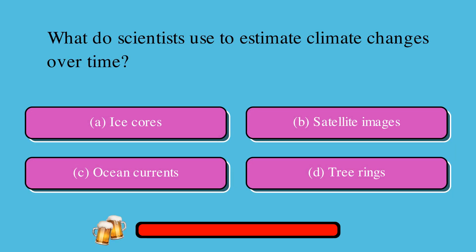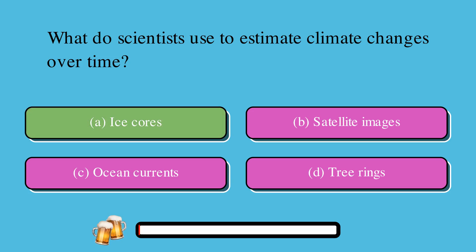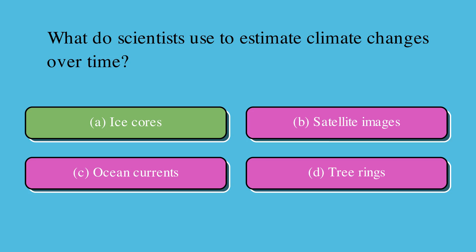What do scientists use to estimate climate changes over time? A. Ice cores, B. Satellite images, C. Ocean currents, or D. Tree rings? The correct answer is A. Ice cores.